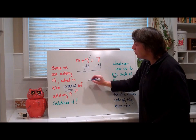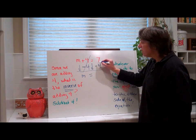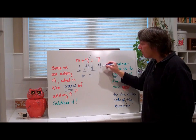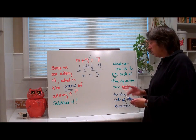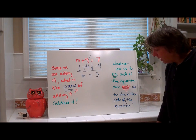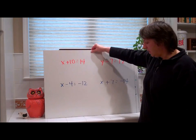Plus 4 minus 4 cancels. We bring down our m. We bring down our equals. And 7 minus 4, you read it. 7 minus 4 is 3. That's what we said.